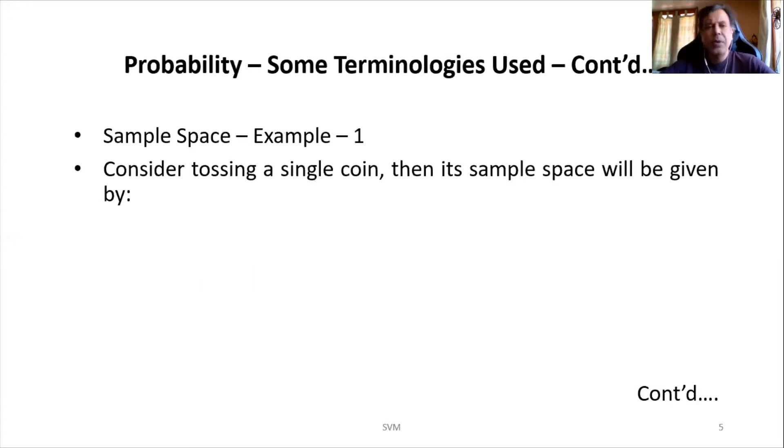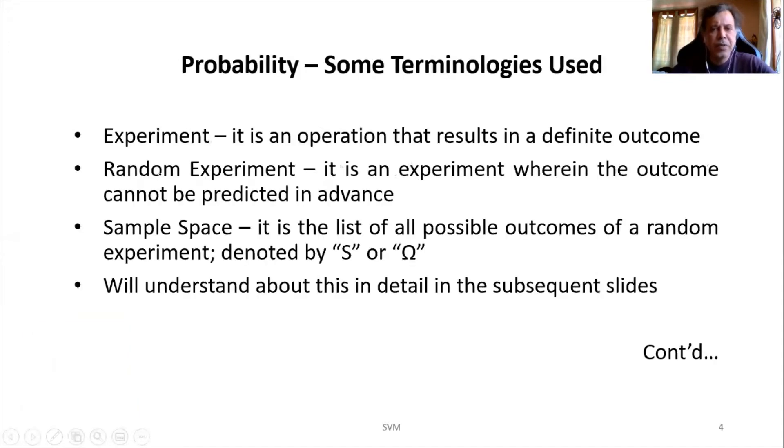First example: same example what we spoke about. Consider tossing a single coin, then its sample space will be given by what? How do you write a sample space? As we had already seen, the sample space is denoted by either capital S or the Greek alphabet Omega. This symbol is called Omega.